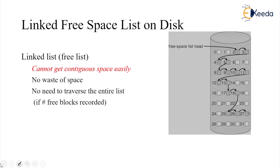The second method is the linked free space list on disk. The linked free space list maintains which blocks are free. The only limitation is that contiguous space cannot be found easily. However, there is no waste of space and no need to traverse the entire list if the number of free blocks is recorded. The free list links free blocks — for example, 2 pointing to 3, 3 to 4, 4 to 5, with 6 and 7 also maintained in the free block list.